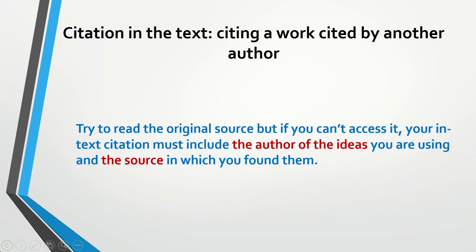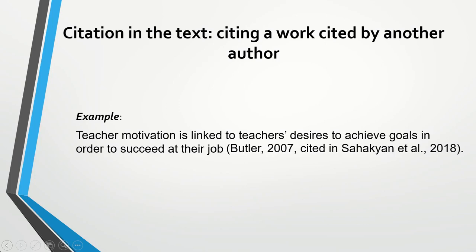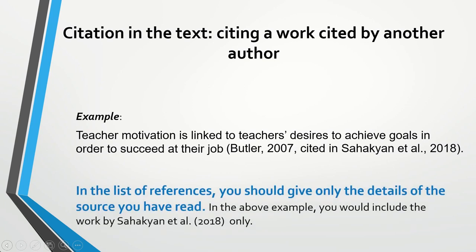If you would like to cite a work cited by another author, that's fine — you can do that, but try to read the original source. If you can't access the original source, your in-text citation must include both the author of the idea you are using and the source in which you found it. In this example I have 'Butler 2007 cited in Sahaken et al. 2018.' This means the idea belongs to Butler 2007, but I read it in Sahaken et al. 2018. Please remember that in the list of references you should give only the details of the source you have read — in this case, only Sahaken et al. 2018 — because I haven't read Butler 2007.